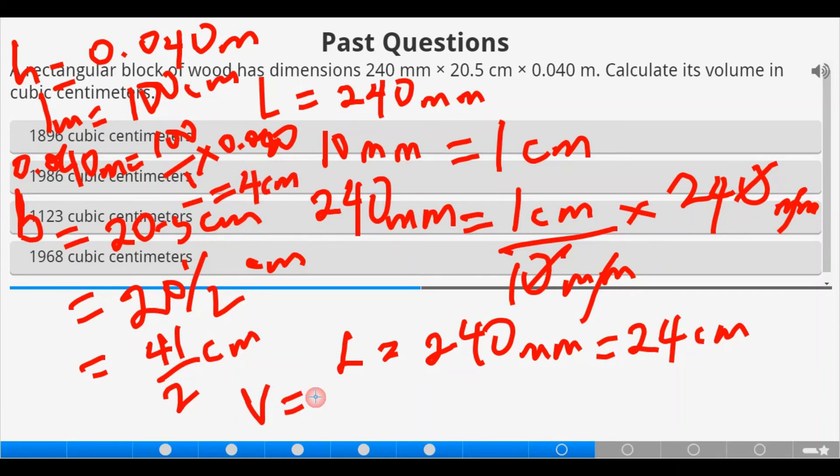For the breadth, let's label it as 20.5 centimeters. Then, we now have the height H to be equal to 0.04 meters. Don't forget that one meter is 100 centimeters. Then, 0.04 meters is equivalent to 100 over 1 times 0.04. And that gives us 4 centimeters. Now, volume is length times breadth times the height. So, we now have length is 24 centimeters times breadth is 20.5 times height is 4 centimeters. So, unit of volume now in centimeters cubed.